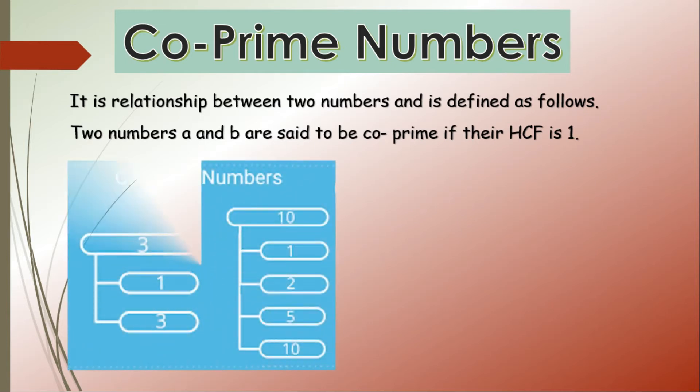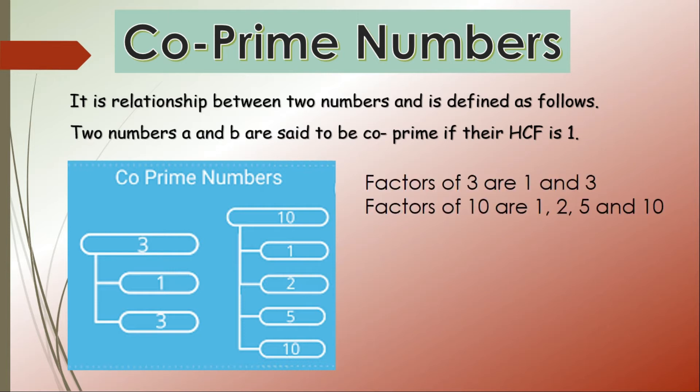I have taken here two numbers, that is number 3 and number 10. The factors of 3 are 1 and 3, and the factors of 10 are 1, 2, 5, and 10. So here you can observe that the common factor between 3 and 10 is only 1, so the highest common factor, that is HCF, is also 1. That means 3 and 10 are co-prime numbers.